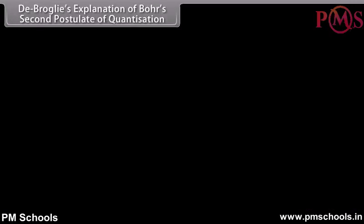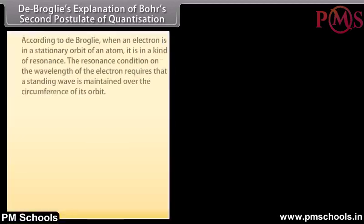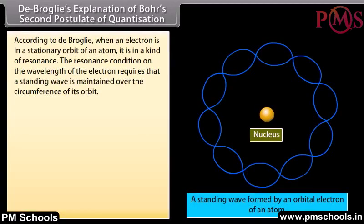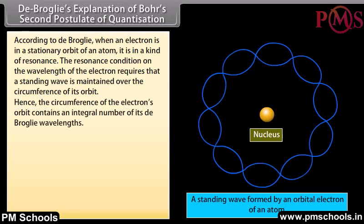De Broglie's explanation of Bohr's second postulate of quantization. De Broglie explained the quantization condition on angular momentum of an orbiting electron. According to De Broglie, when an electron is in a stationary orbit of an atom, it is in a kind of resonance. The resonance condition on the wavelength of the electron requires that a standing wave is maintained over the circumference of its orbit. Hence the circumference of the electron's orbit contains an integral number of its De Broglie wavelengths: 2πr = nλ.